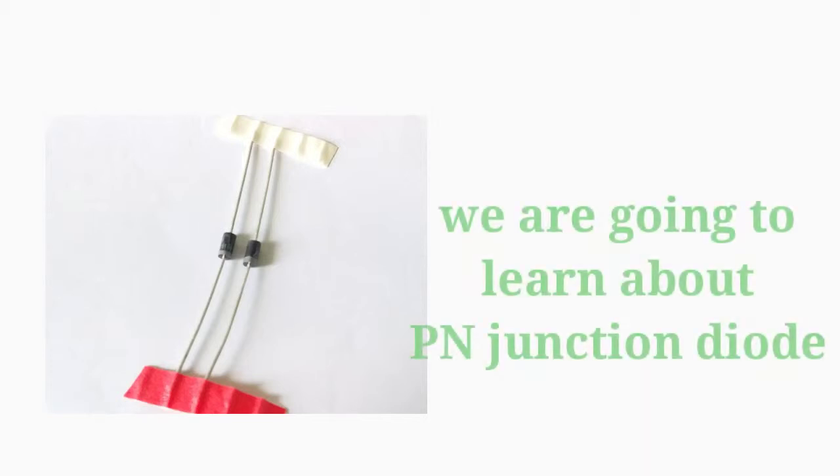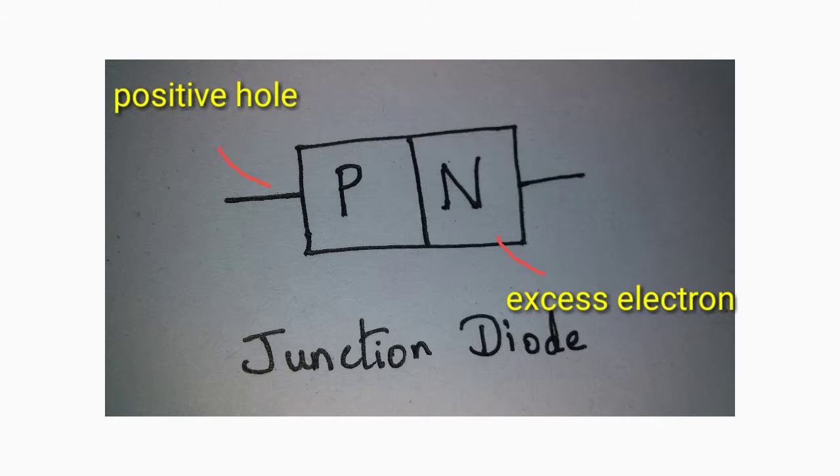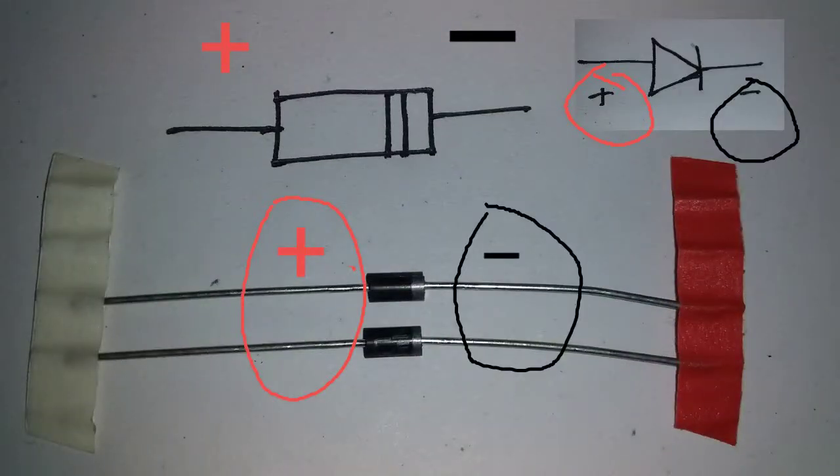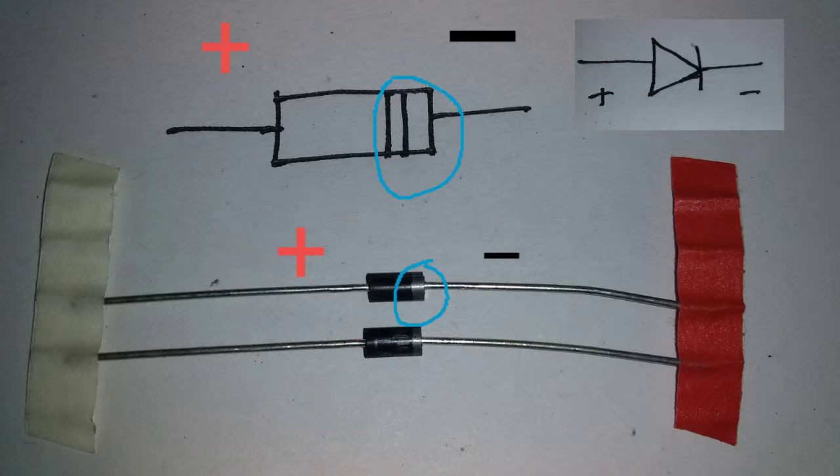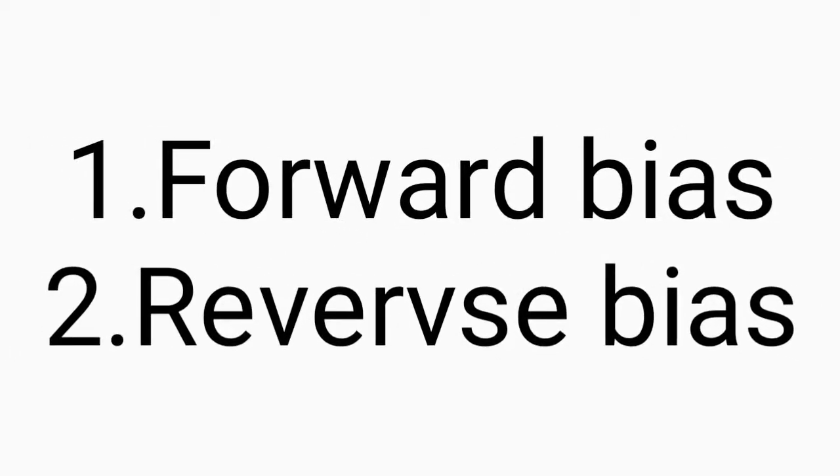Let's take a look at the PN junction diode. You can see the parts of the diode. Let's do this on the breadboard.